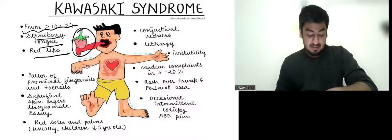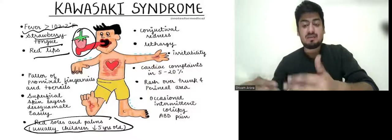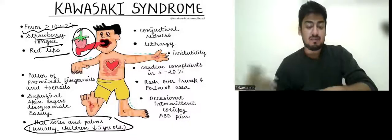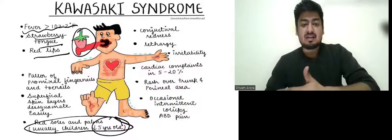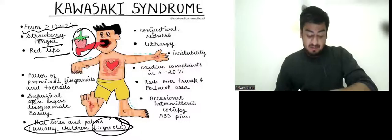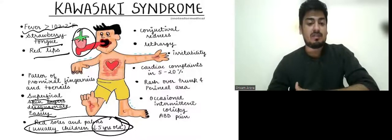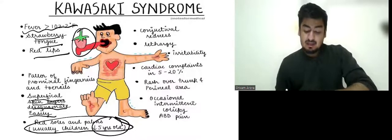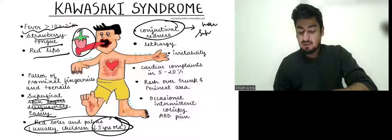There is also erythema of the soles and palms. In Kawasaki disease, occurring in children under five years, the superficial skin layers desquamate easily due to desquamative dermatitis. Conjunctival redness is present and is non-suppurative or non-purulent.